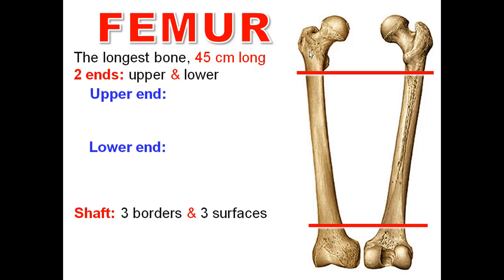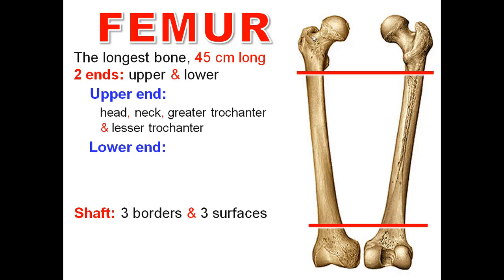The upper end is formed of head, neck, greater trochanter, and lesser trochanter. The two trochanters are connected anteriorly by the intertrochanteric line and connected posteriorly by the intertrochanteric crest, which carries the quadrate tubercle.